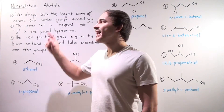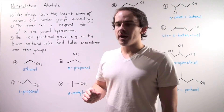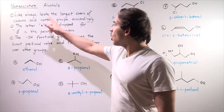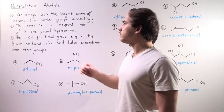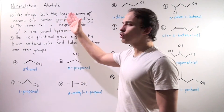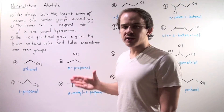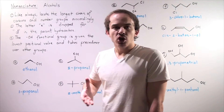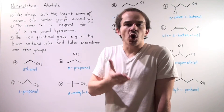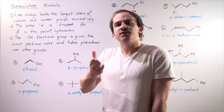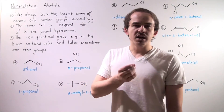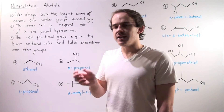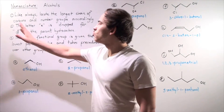Rule number one: like always, locate the longest chain of carbons and number the groups accordingly. Groups like bromine come before chlorine because B comes before C in the alphabet.